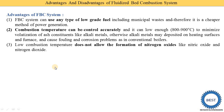The third advantage is that the low combustion temperature does not allow the formation of nitrogen oxides like nitric oxide (NO) and nitrogen dioxide (NO₂). When combustion temperature is above 1100°C, NOx production is higher and pollution increases. But in the FBC boiler the temperature is lower, so nitrogen oxide pollution is reduced.